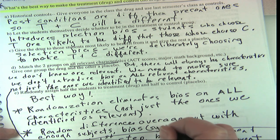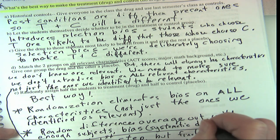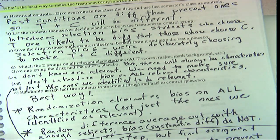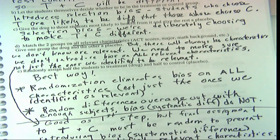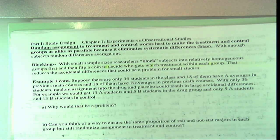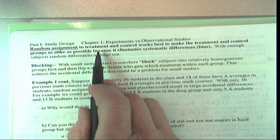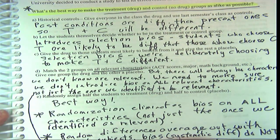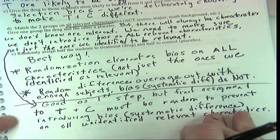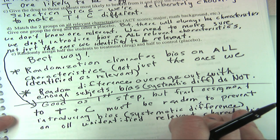Bias — systematic differences — do not average out. So if we have a large enough study, we don't have to bother matching everyone because random differences will average out. But what about small studies? With small sample sizes, the researcher should block subjects into relatively homogeneous groups first — matching on relevant characteristics — and then randomly assign within each group. For example, if you flip a coin twice you could get all heads, but with 100 flips it's almost impossible. That's how random differences average out. Systematic ones always go in one direction and never cancel out.